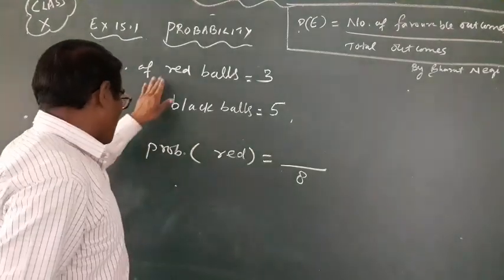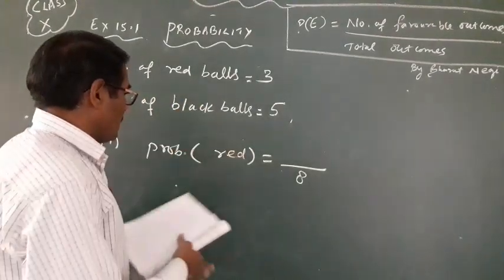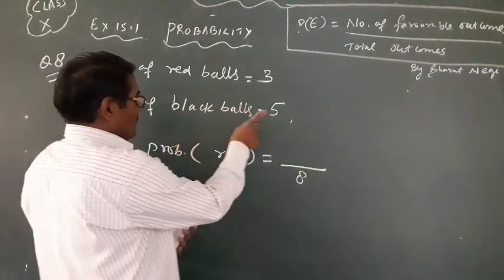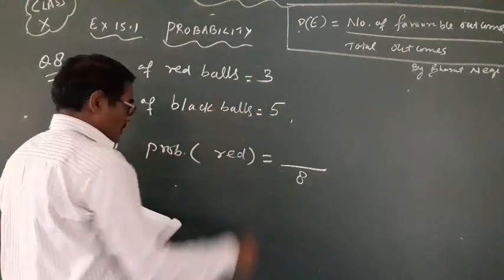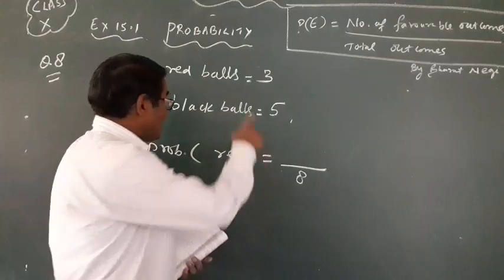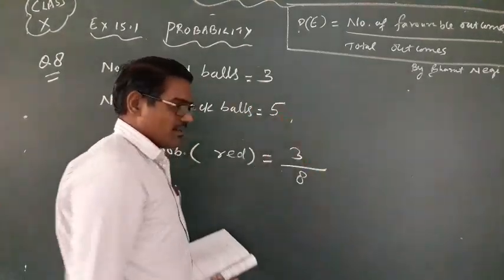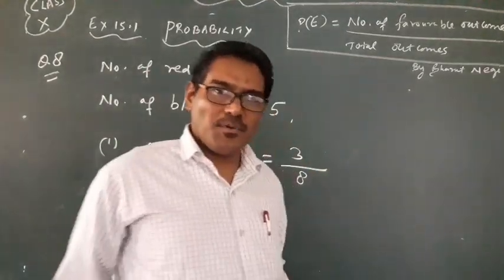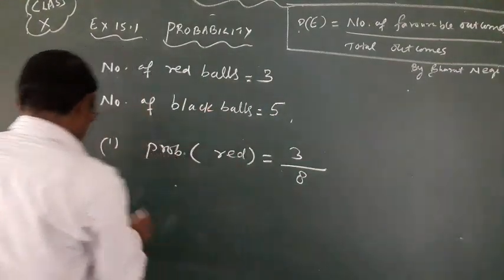Total balls. We have only red and black balls. So their total outcome, the number of black balls is 5 and number of red balls is 3. Now, how many red balls are here? 3 red balls. 3 by 8 is the probability of taking out the red ball out of the red and black balls.